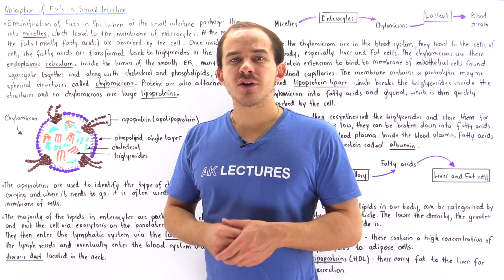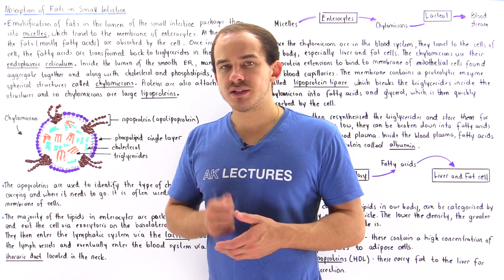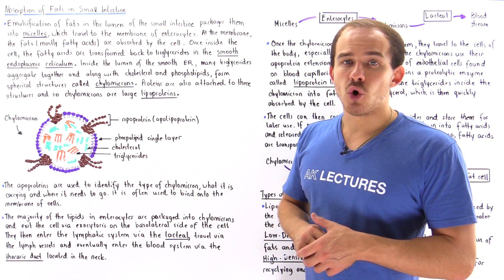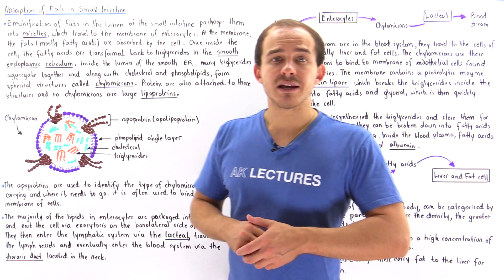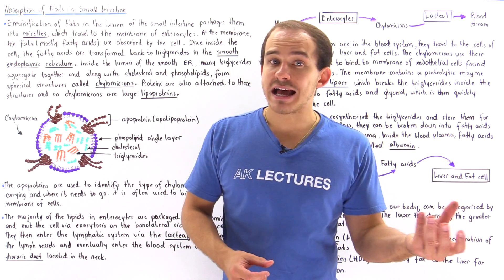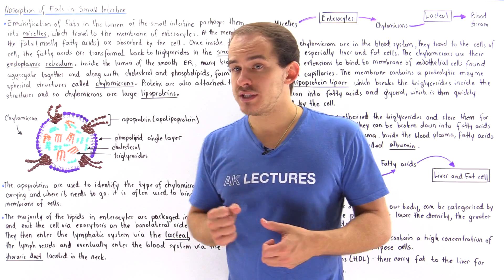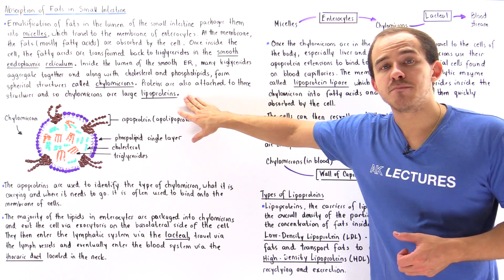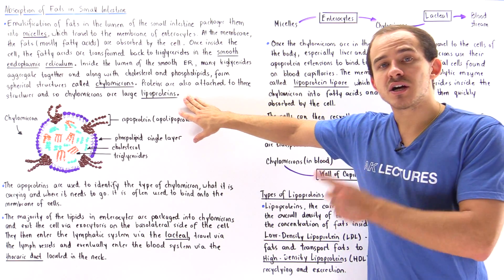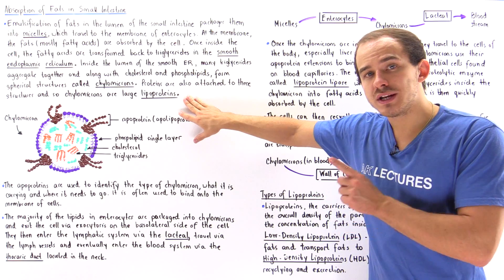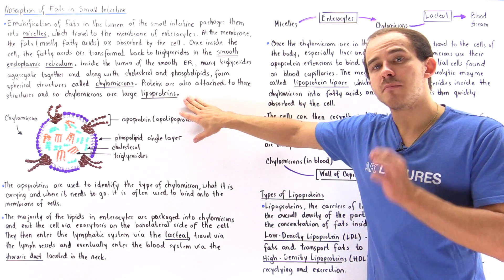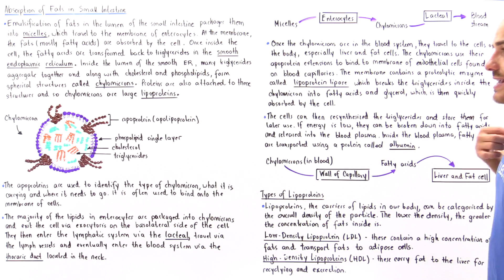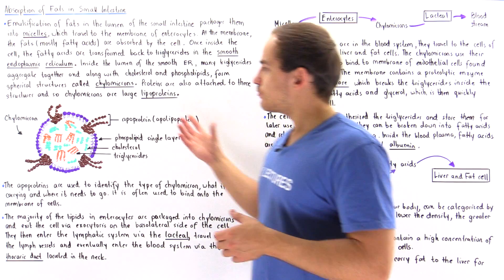The chylomicron also contains proteins and must be modified in the Golgi apparatus. Because it contains fats, lipids as well as proteins, a chylomicron is a lipoprotein. In fact, the chylomicron is the largest type of lipoprotein.